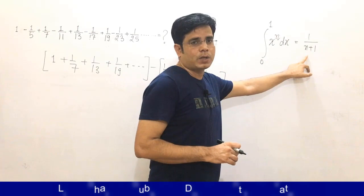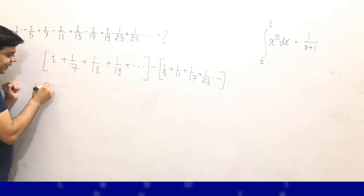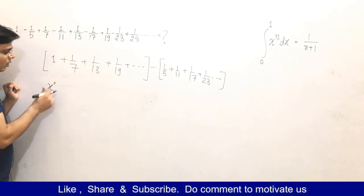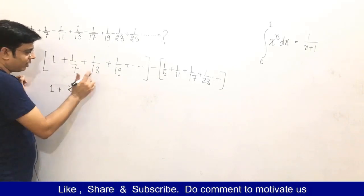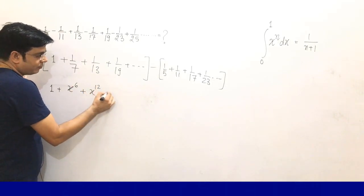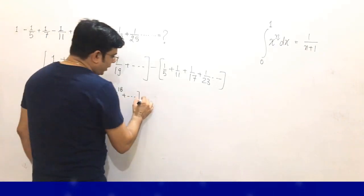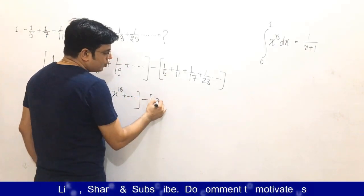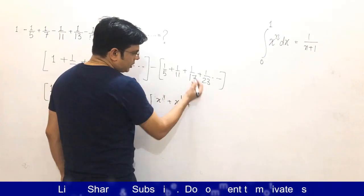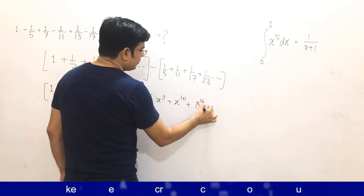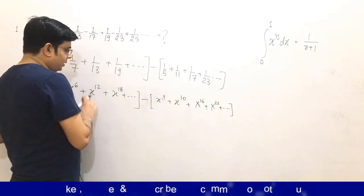Now we apply the integration concept. To get 1, integrate x to the power 0; to get 1/7, integrate x to the power 6; to get 1/13, integrate x to the power 12; to get 1/19, integrate x to the power 18; and so on. For the negative terms: to get 1/5, integrate x to the power 4; for 1/11, integrate x to the power 10; for 1/17, integrate x to the power 16; for 1/23, integrate x to the power 22; and so on.